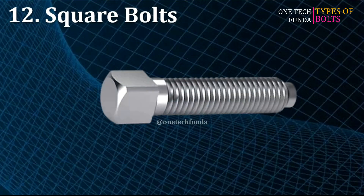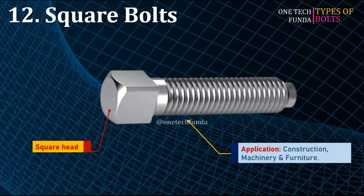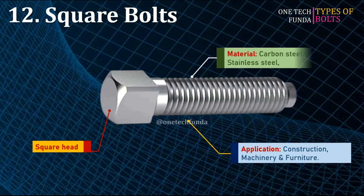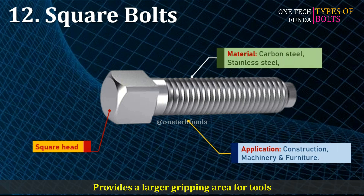Square bolts feature a square-shaped head with a threaded body. Used in construction, machinery, and furniture. Materials include carbon steel and stainless steel. The main advantage is they provide a larger gripping area for tools.